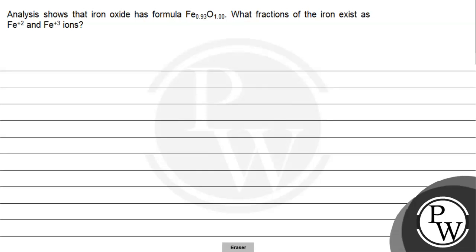Hello, let's read the question. Analysis shows that iron oxide has formula Fe₀.₉₃O. What fractions of the iron exist as Fe²⁺ and Fe³⁺?